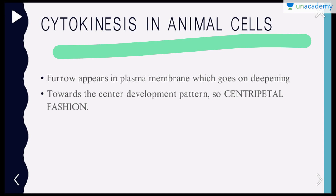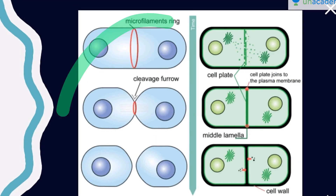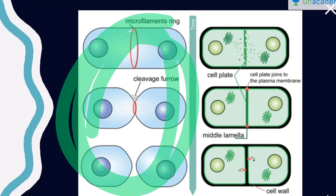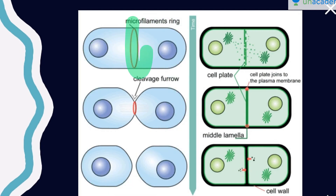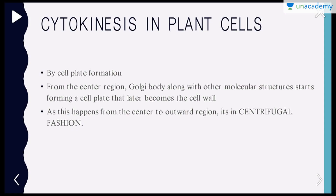Cytokinesis in animal cells: since there is no cell wall, the process is pretty simple. Looking at the diagram, what happens is a microfilamentous ring is created, and this ring moves toward the center. The plasma membrane comes in from both sides toward the center, and a cleavage furrow is formed. This is how two daughter cells are obtained.